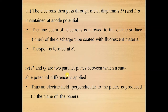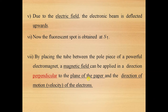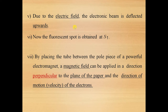P and Q are two metal plates between which a suitable potential difference is applied — that is, we are now applying an electric field to the beam of electrons. Due to this electric field, the electron beam is deflected upwards and the fluorescent spot is now obtained at S1.